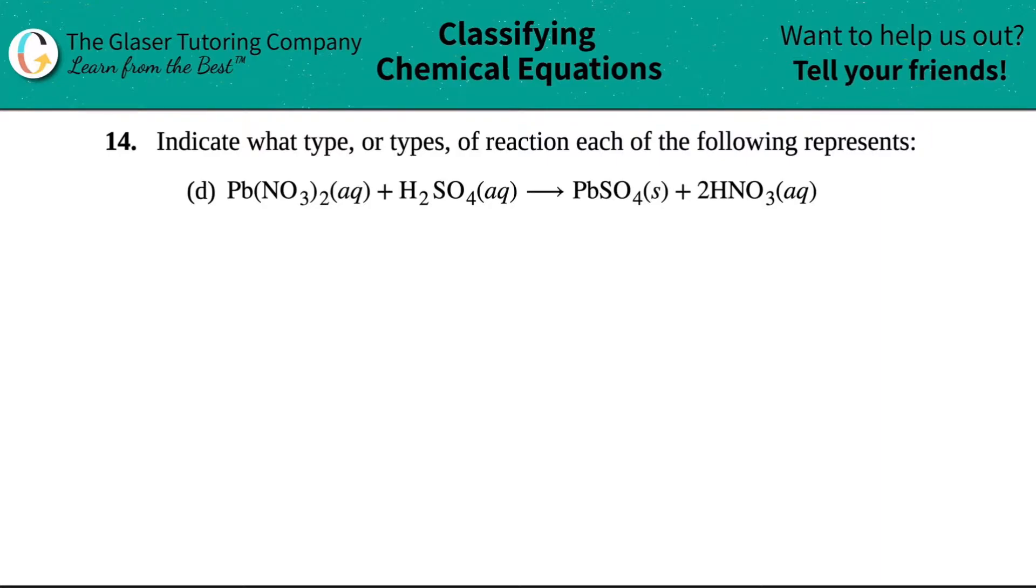So anyway, here we have basically lead, Pb, mixing up with NO3. And know your polyatomics, guys. NO3 is nitrate. So Pb is hooking up with nitrate. That's how this compound is formed.